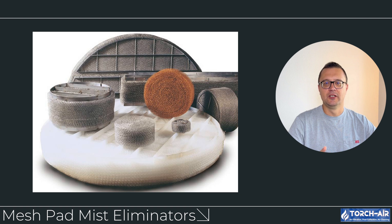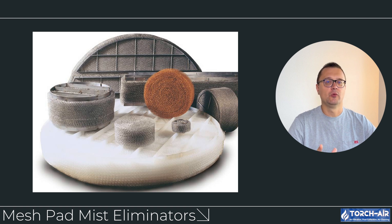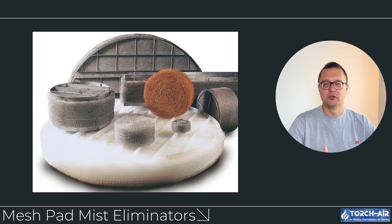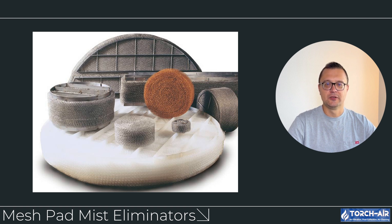There are several types of mist eliminators and droplet separators, each designed to handle different mist or droplet sizes, gas flow rates, and applications. The first type is mesh pad mist eliminators. These consist of woven or knitted mesh materials that create a high surface area for droplets to collide with. As the gas stream passes through the mesh, mist droplets are captured and coalesce into larger droplets that fall out of the stream. Best for fine mist and small droplet sizes, typically below 10 microns. Mesh pads are efficient at removing fine mist and aerosols, but they can become clogged with particulates over time and may require regular cleaning or replacement, especially in dusty environments.